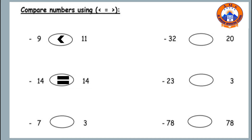Number three: seven and three. Which is bigger? The alligator is going to eat number seven because it's the big number.